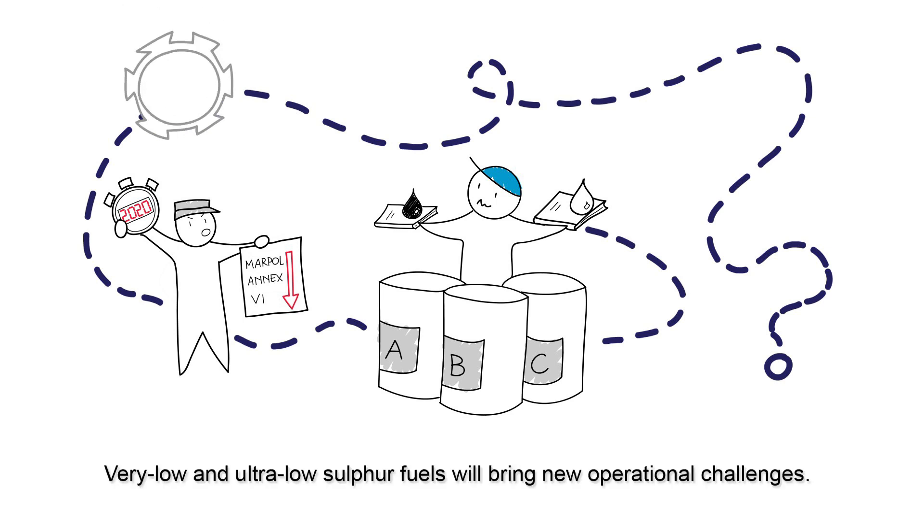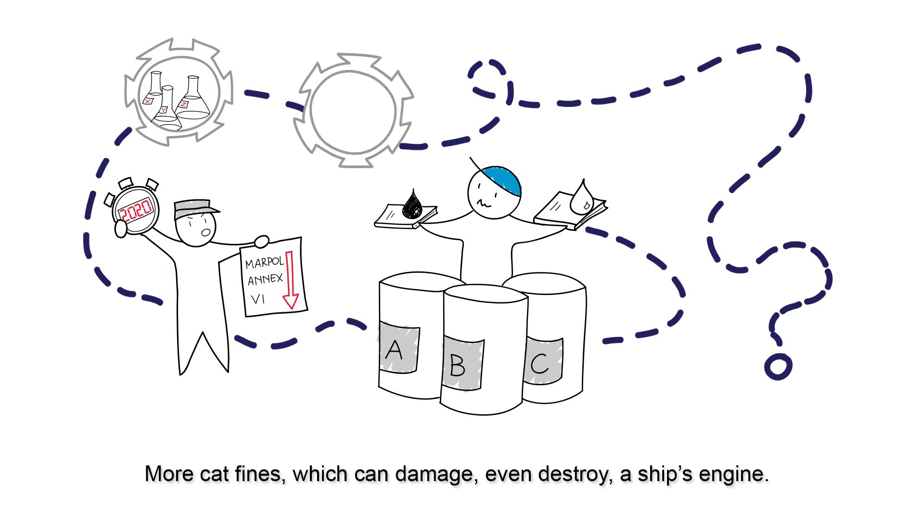Very low and ultra-low sulfur fuels will bring new operational challenges. More catfines, which can damage, even destroy a ship's engine.